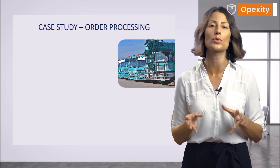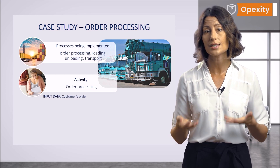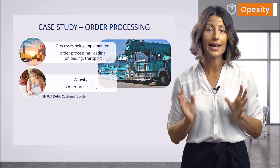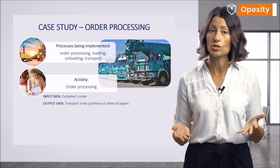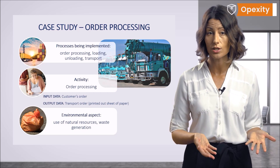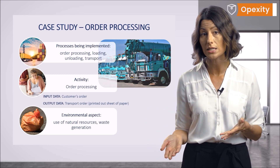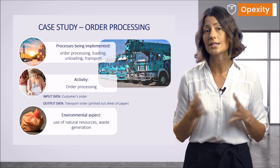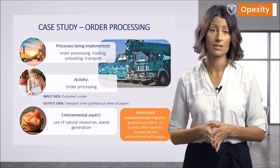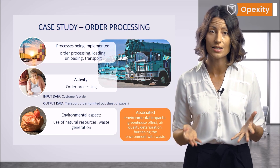Let's take a closer look at the process of order processing. The input data will be information sent by the customer — that is, electronic orders — so the company needs electricity and computer equipment to operate properly. The output data will be a transport order, that is, a printed sheet of paper. The environmental aspects will be, on one hand, the use of natural resources — coal to produce electricity, and trees to produce paper — and on the other hand, waste generation: printer toners, waste electrical equipment, and waste paper. The associated environmental impacts are the greenhouse effect, air quality deterioration, and burdening the environment with waste.